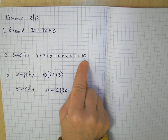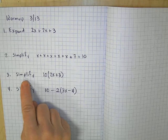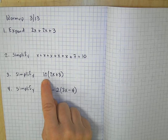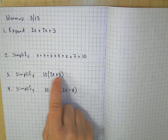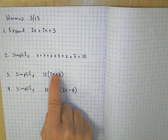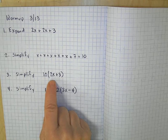The third problem, this one, to simplify this, you need to distribute. We have 10 groups of 2x plus 3. So 10 times 2x and 10 times 3, because you have 10 groups of 2x and you have 10 groups of 3.